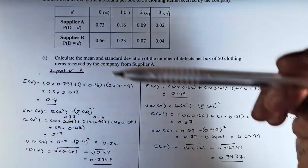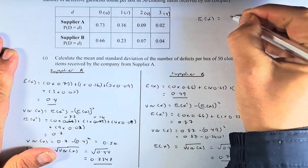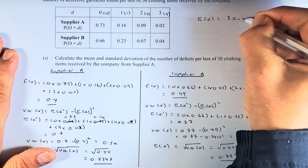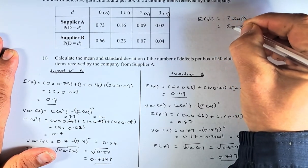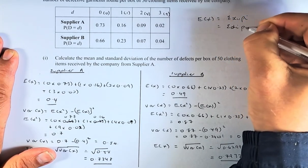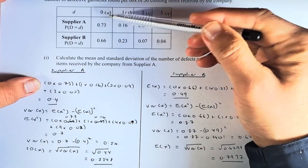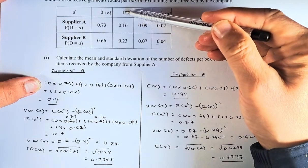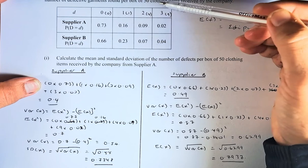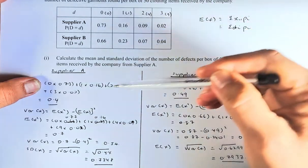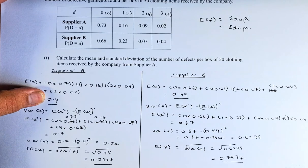To calculate the mean is very simple. The formula to calculate the mean, E(X), is going to be sum of X_i P_i, or in this case sum of D_i P_i. So what you are going to do is take 0 multiplied by 0.73 plus 1 times 0.16 plus 2 times 0.09 plus 3 times 0.02, and the answer comes up to 0.4.